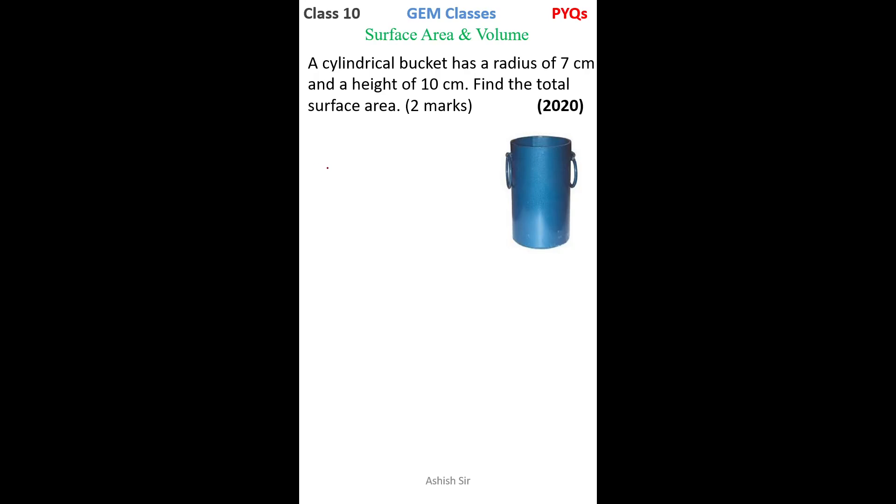Hi, here we have a question from surface area and volume. A cylindrical bucket has a radius of 7 centimeters and height of 10 centimeters. Find the total surface area. So first of all, we write down the dimensions: radius 7 centimeters, height 10 centimeters.